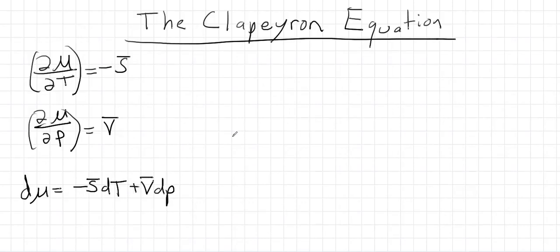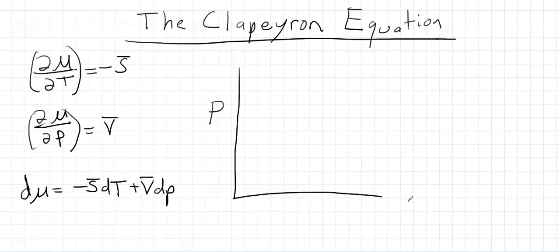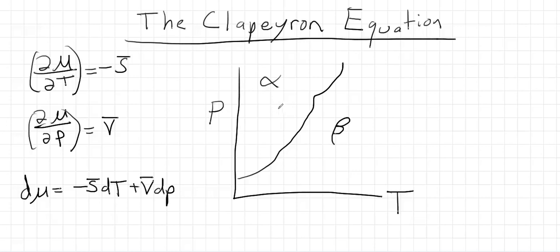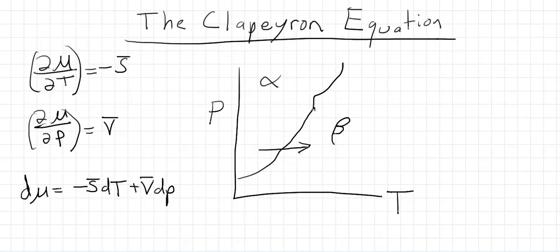We can use this to derive the Clapeyron equation. Imagine a pressure-temperature phase diagram with two different phases — we'll label them alpha and beta — because it doesn't matter whether it's solid and liquid, solid and gas, or liquid and gas. We're going to have a transition from one phase to the other: vaporization, sublimation, melting — it doesn't matter. We want to see how the line showing where those two phases are in equilibrium depends on the molar volume and molar entropy.